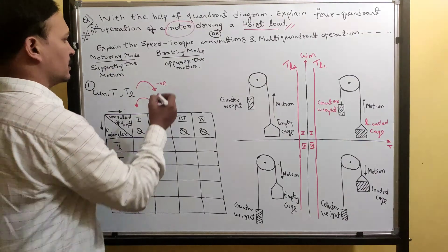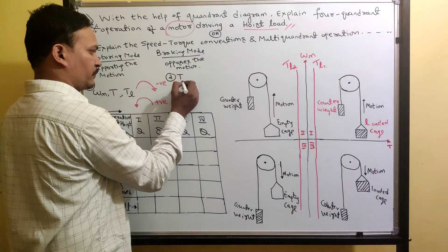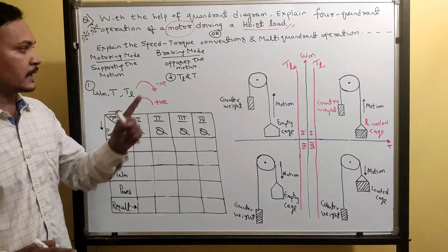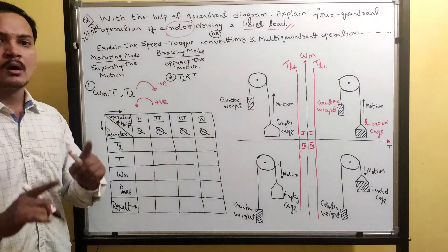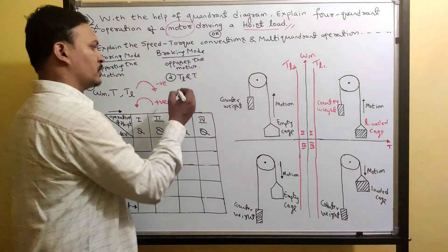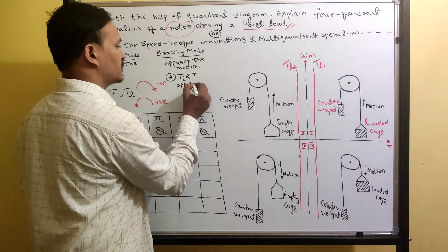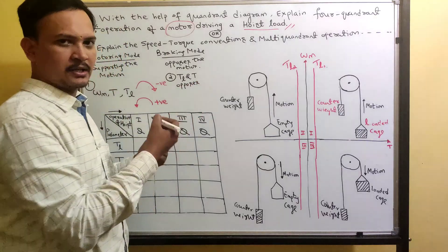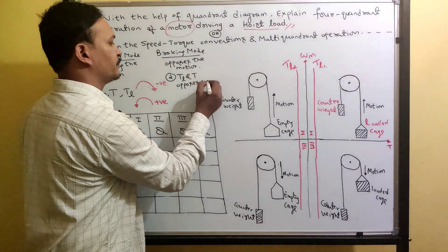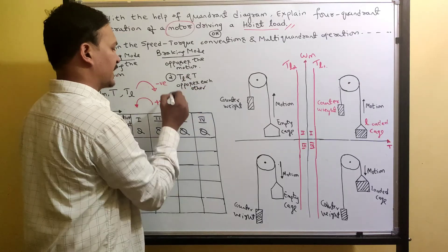The second assumption is that motor torque and load torque always oppose each other — they are always opposite to each other. This is also practically valid.